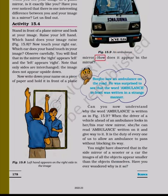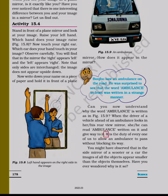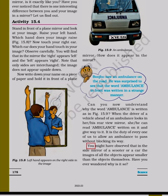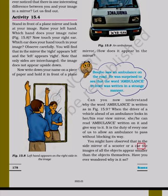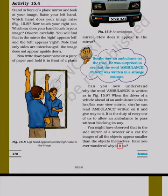An ambulance. Bujho saw an ambulance on the road. He was surprised to see that the word ambulance in front was written in a strange manner. Can you now understand why the word ambulance is written as in figure 15.9? When the driver of a vehicle ahead of an ambulance looks in their rear view mirror, they can read 'ambulance' written on it and give way to it. It is the duty of every one of us to allow an ambulance to pass without blocking its way. You might have observed that in the side mirror of a scooter or a car the images of all the objects appear smaller than the objects themselves.